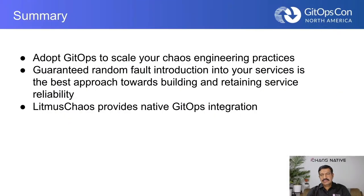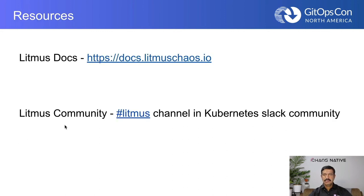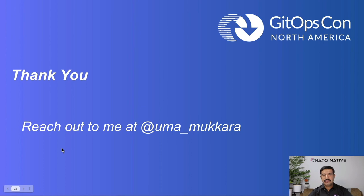To summarize this session: you can adopt GitOps for chaos engineering to automatically run workflows and also to use Git as a backend for your chaos configuration store. It's always good to have a guarantee of random fault injection whenever there is a change to your deployments or applications. Litmus Chaos is one such tool with native GitOps integration. You can get more resources about Litmus and GitOps at our docs, and join us on the Litmus channel on Kubernetes Slack. Thank you, and have a great KubeCon!